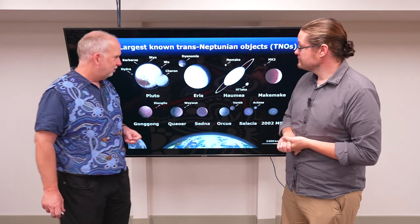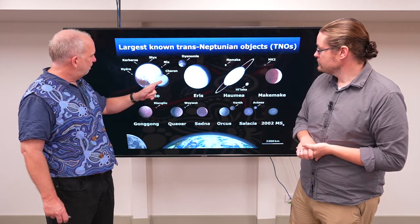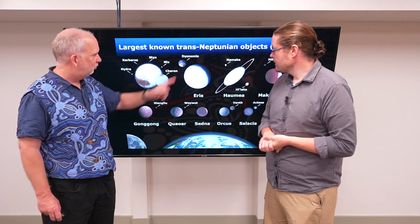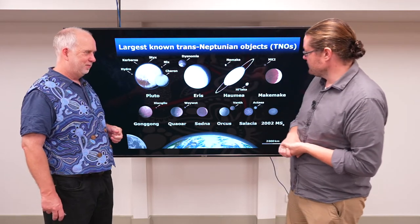And if we plot all these to scale, here's Pluto with its big moon Charon and a whole bunch of small moons, and there's Eris with its moon Dysnomia. They're pretty similar in size.